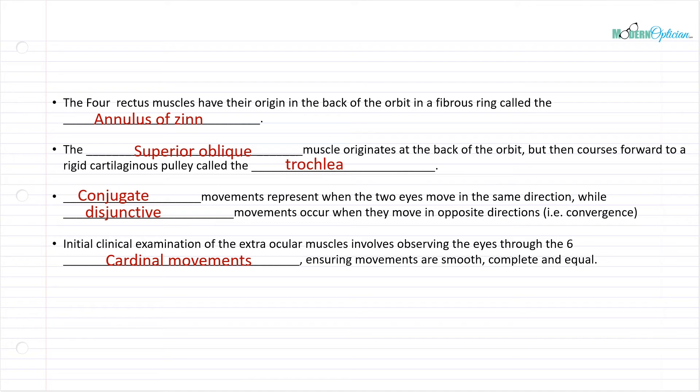Initial clinical examination of the extraocular muscles involves observing the eyes through the six cardinal movements, ensuring they're smooth, complete, and equal. Up, down, left, right, in, and back out. Those are your six movements. We call those smooth pursuits, that the eye is going to pursue the target and go through all those different movements equally. When we move it close to the nose, they will have that disjunctive movement inwards, and then back outwards to being centered.